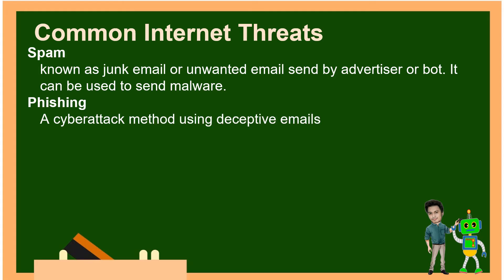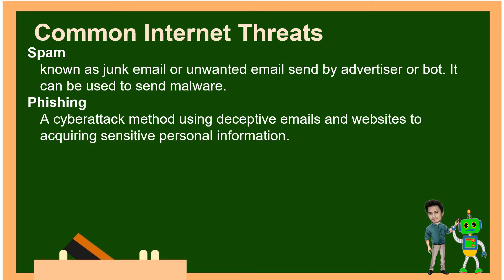Phishing is a cyber attack method using deceptive emails and websites to acquire sensitive personal information. This is a strategy used to get our personal details — they will send us an email with a link we need to click. For example, with credit cards, they send a link asking you to update your information, but it's not actually from the bank — it's from hackers trying to steal personal and bank information to access your savings.